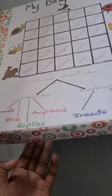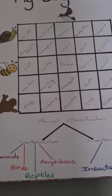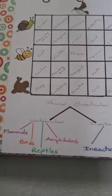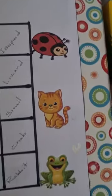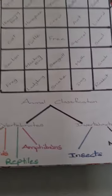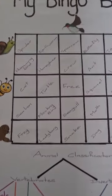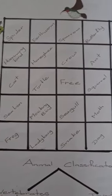I used a cardboard box to create this board. I used markers, glue, paper, and I also used some pictures. On this bingo board there are different kinds of animals — we have vertebrates